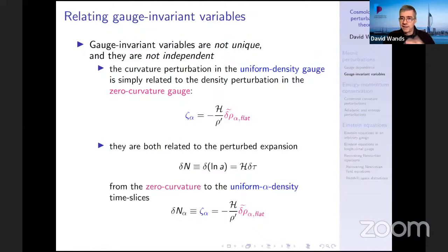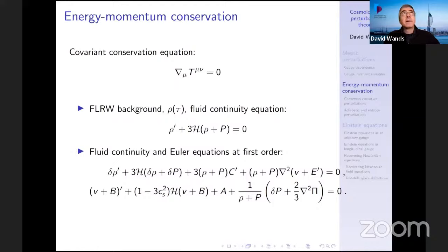These are examples of the quantities I was defining yesterday. The slides are on the conference website, and I'll put them on the Slack channel as well. Today's focus is really using these quantities in the dynamical equations — specifically looking at the energy-momentum conservation, the covariant conservation of energy momentum, so the divergence of the energy momentum tensor is zero in general relativity.